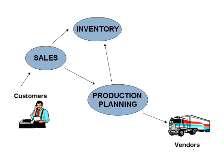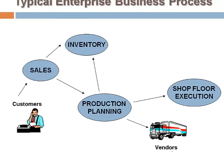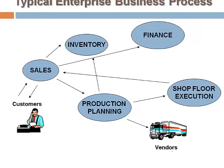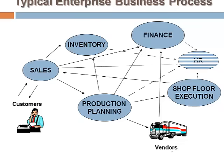Then production planning forwards the raw materials to the shop floor for actual production. Once ready, the shop floor team forwards the goods to the sales team, who in turn deliver it to the client. The sales team updates the finance department with revenue generated by the sale. The production planning team updates the finance department with payments to be made to vendors for raw materials. All departments approach HR for any human resource related issues.